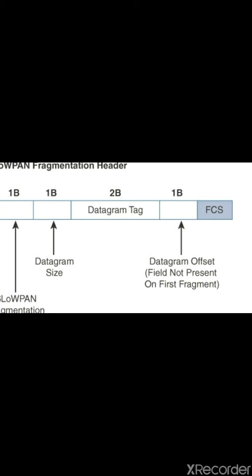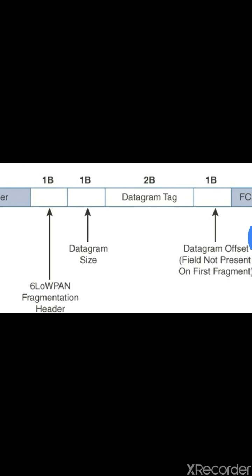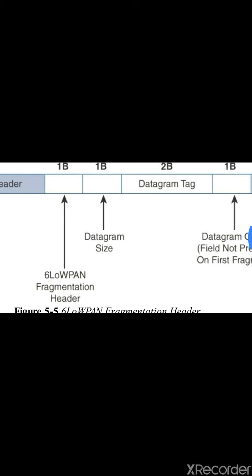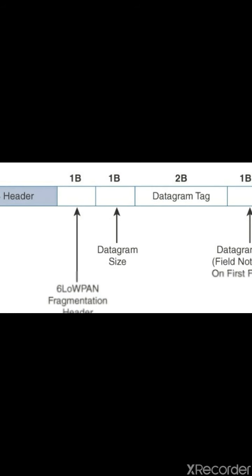The 6LoWPAN fragmentation header also includes a one-byte starting fragment field. This field uses a unique bit value to identify whether the subsequent fields behind it are fragment fields or not — it is used solely to identify whether the fields are fragmented fields.